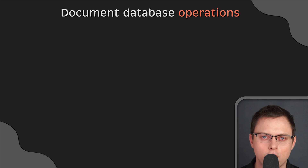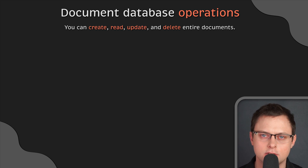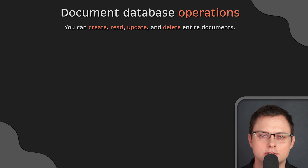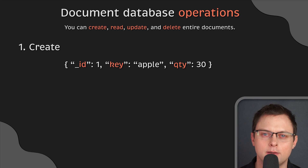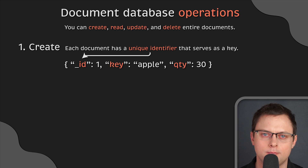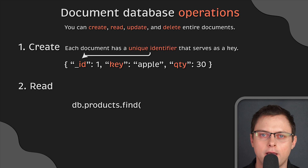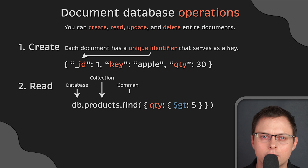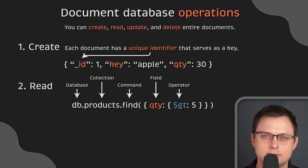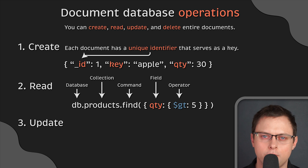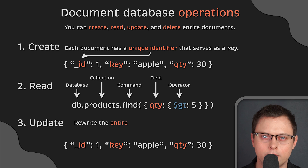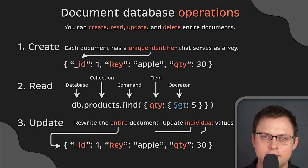Let's talk about the operations you can perform on a document database. You can create, read, update, and delete entire documents stored in the database. Document databases provide a query language or API that allows developers to run these operations. Each document has a unique identifier that serves as a key. You can run queries using field values or keys, and add indexes to increase read performance. You can also update existing documents flexibly — either rewrite the entire document or update individual values.